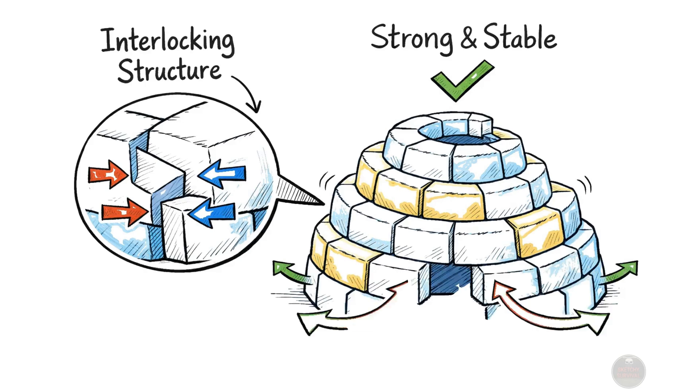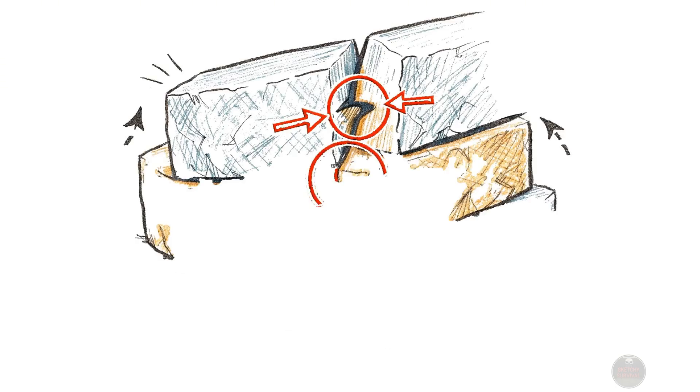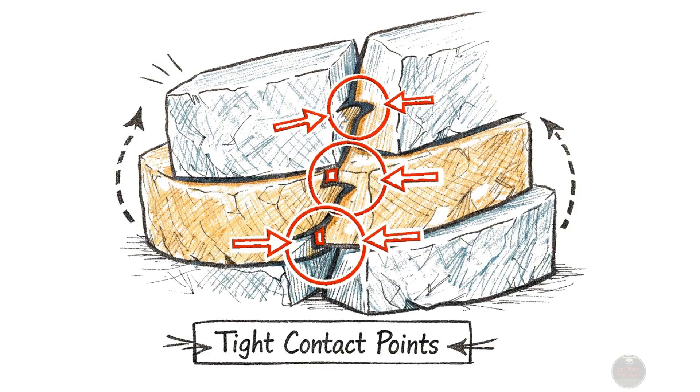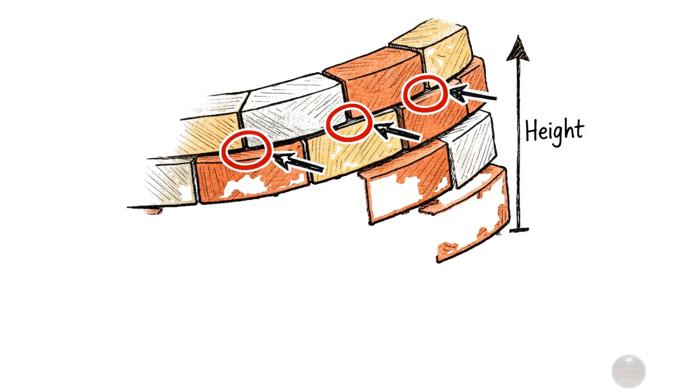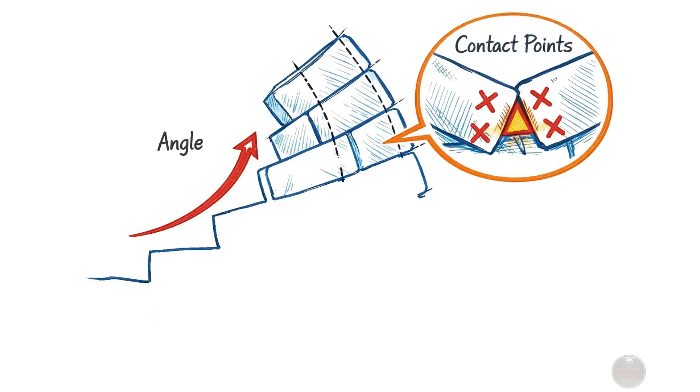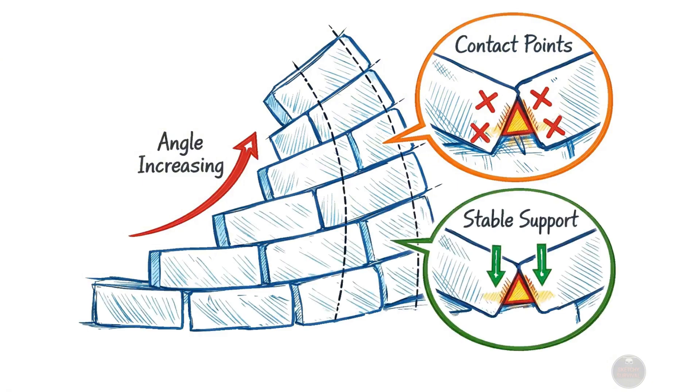This ingenious method is critical physics, as the constant, uninterrupted contact points between each spiraling block are vital. These contact points prevent the entire dome from collapsing inward as you build higher. This stability is maintained as you lean the blocks more acutely.